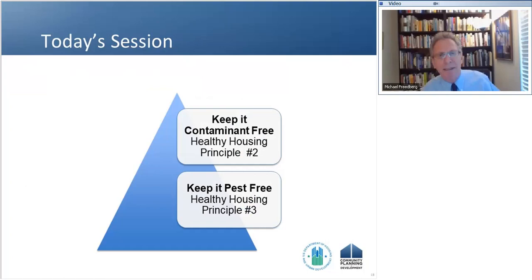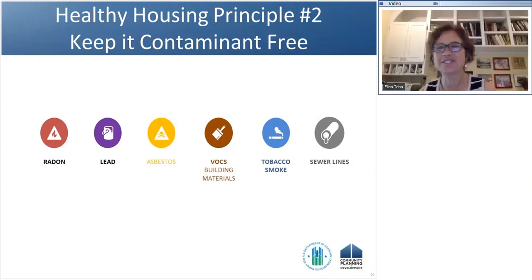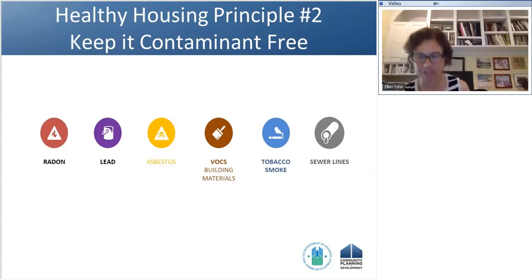Thanks very much, Michael. Today, as Michael said, we're going to talk about two principles — contaminants and pests. Let me start with contaminants. The Health at Home Guidelines provide guidance in six categories. I'm going to give you a quick spin through four of them: radon, lead, asbestos, and VOCs. I won't be covering environmental tobacco smoke — that's really around smoke-free housing policies — or sewer lines, because the guidelines are quite straightforward for those. First, I want to tackle lead. Most of you who receive HOME or CDBG funds from HUD are likely familiar with the HUD Lead Safe Housing Rule, but because it is so important, we really wanted to reemphasize what is required.